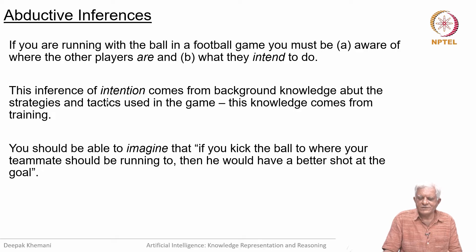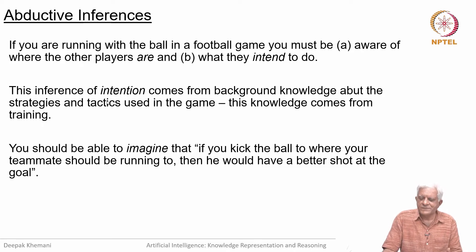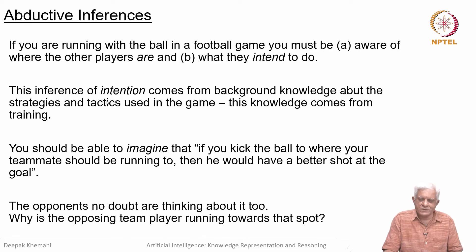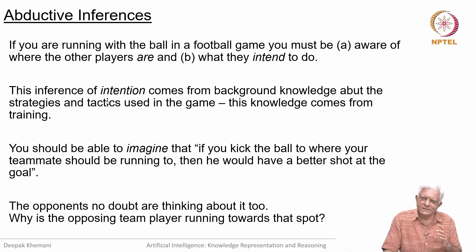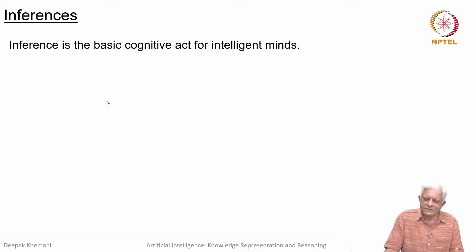You cannot think of intelligent agents that cannot imagine what will happen if they do certain actions. To be able to do that, they must have access to a lot of knowledge about the domain they are operating in, the possible actions available, the consequences of those actions, and — in multi-agent games like football — what the other players might be doing. The opponents are thinking about that too: an opposing player may have figured out that you intend to pass the ball to your teammate and would like to block it. Making inferences is a basic cognitive act for intelligent minds.